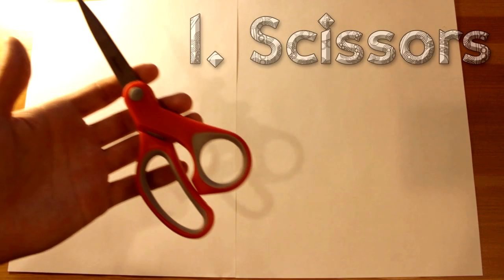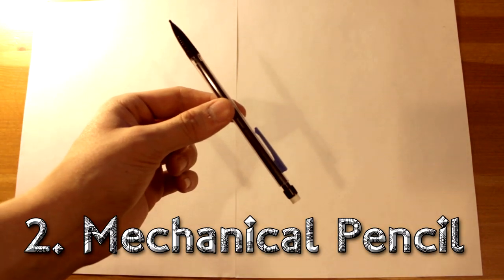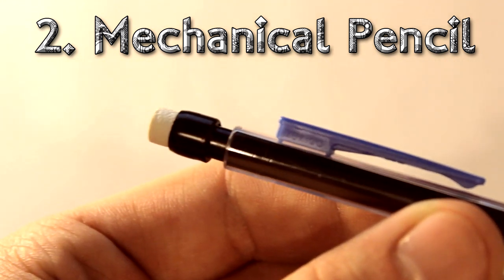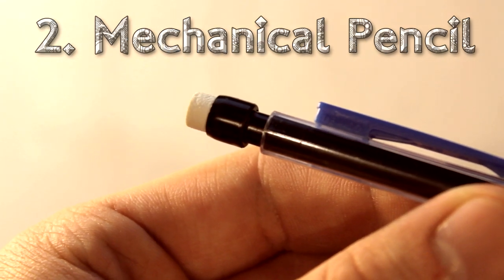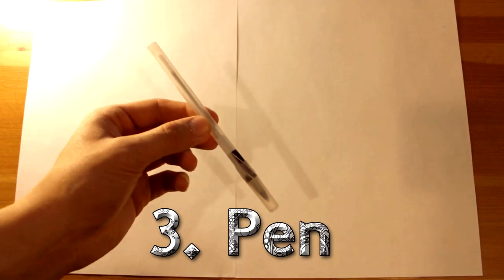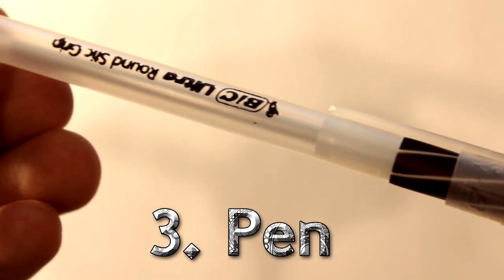There are a few things you're going to need before starting. A pair of scissors, a cheap mechanical pencil - you'll need one with a long inner barrel that is attached to a flared end where the eraser is. A cheap pen, one with a long cylinder casing.